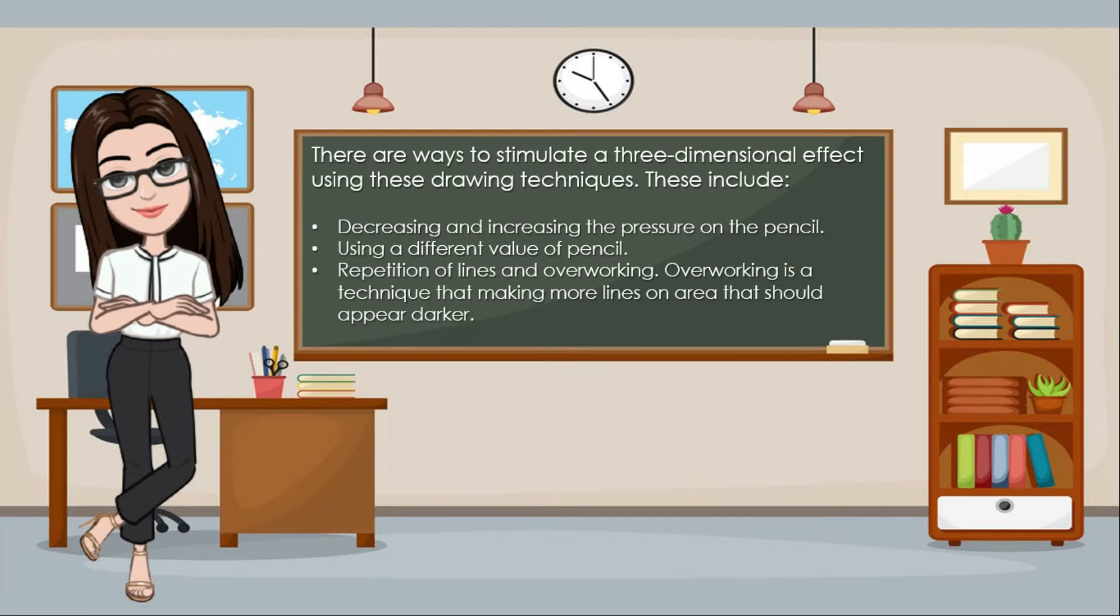There are ways to stimulate a three-dimensional effect using these drawing techniques. These include decreasing and increasing the pressure on the pencil, using a different value of pencil, repetition of lines, and overworking. Overworking is a technique that making more lines in an area that should appear darker.